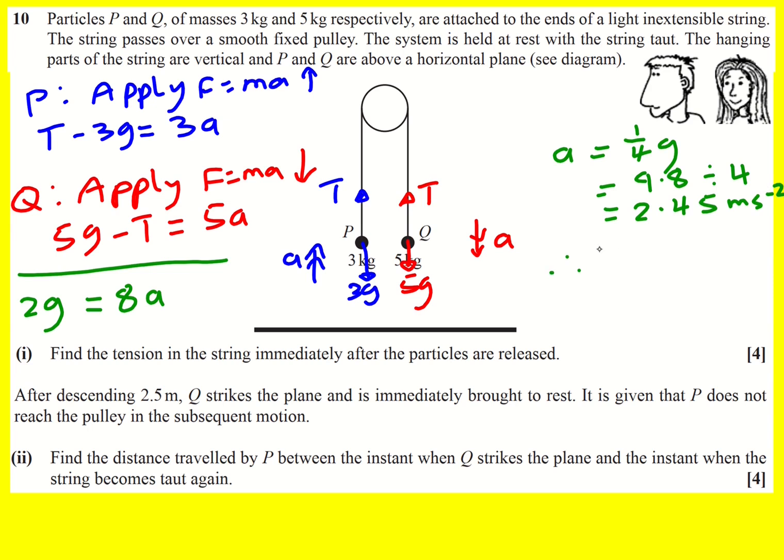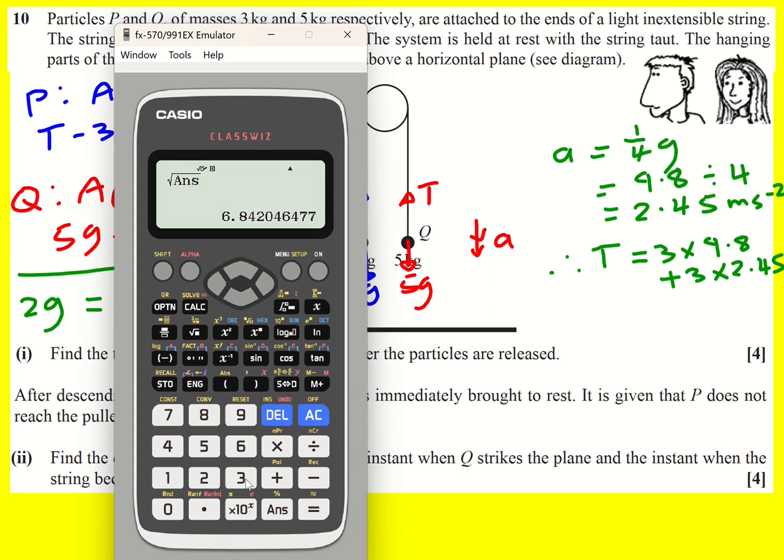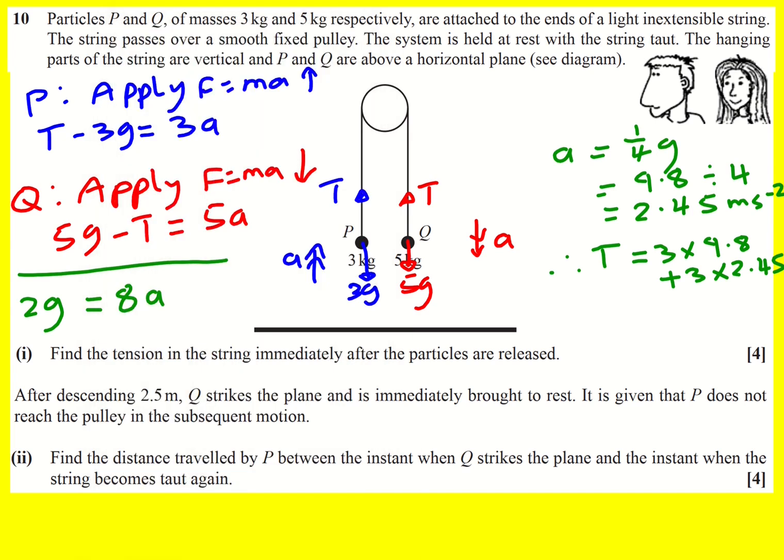And then substitute back into either one. So therefore T is going to be 3 times 9.8 plus 3 times 2.45. Okay I think I'm going to use my calculator for that. And we get 36.75.